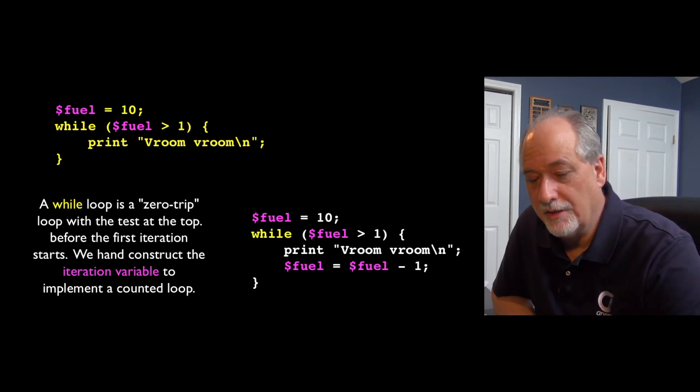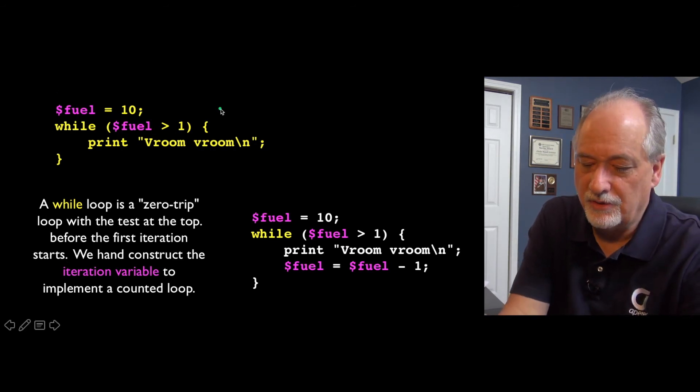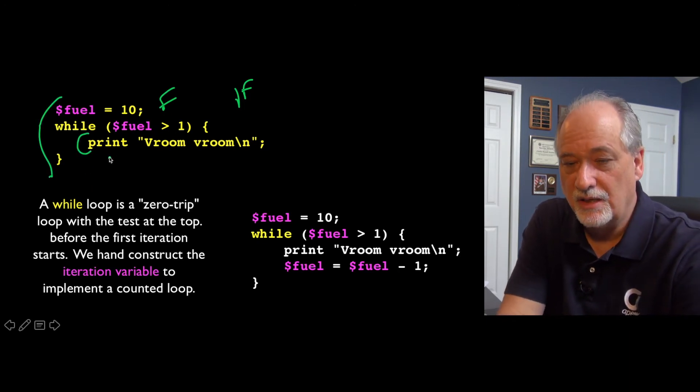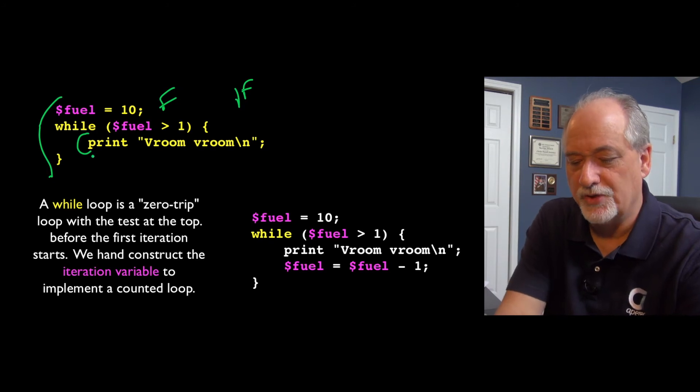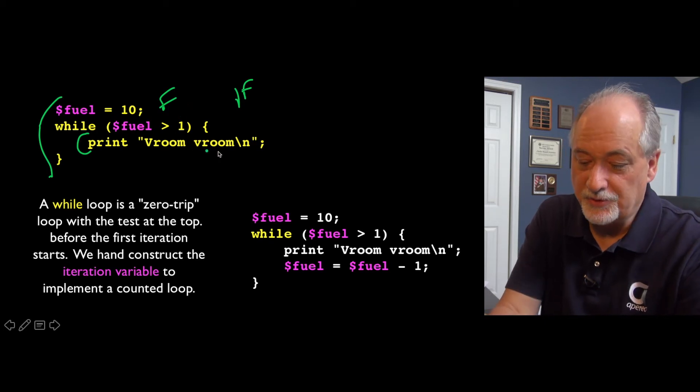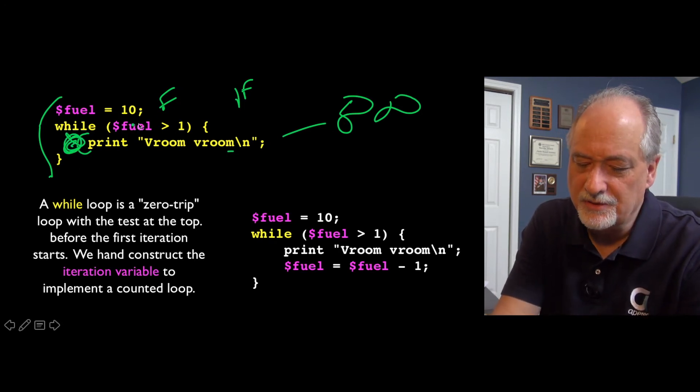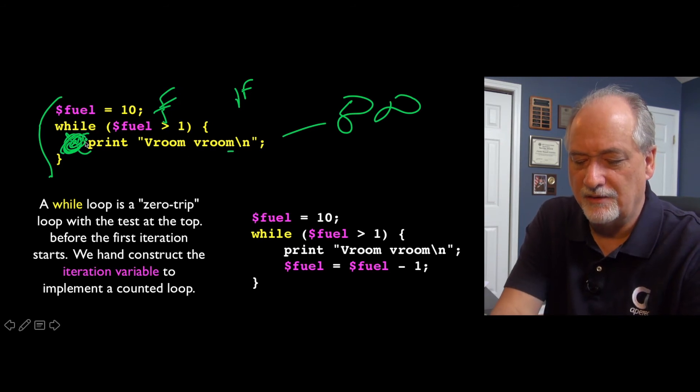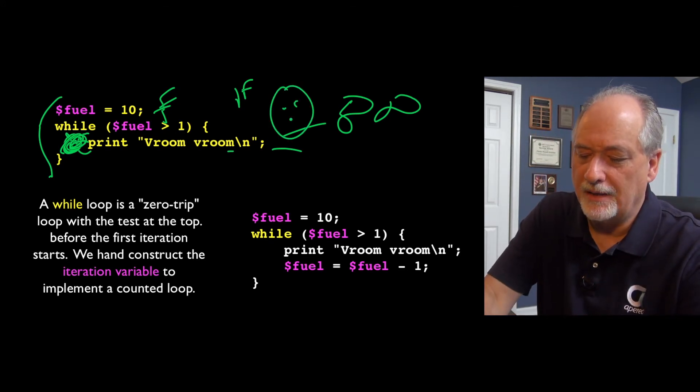In terms of looping structures, there is a top tested while loop, where it's asking a question, and it's a zero trip loop. It functions the first time kind of like an if statement, and if this is false, it skips completely, which means it won't execute the loop body even once. This particular loop is bad because it's an infinite loop, meaning that it's going to run forever, because this is going to stay true, fuel is greater than one, and we're not doing anything to fuel.